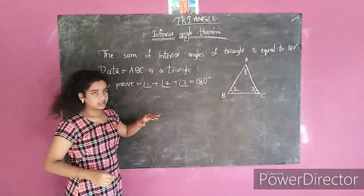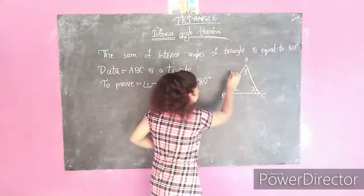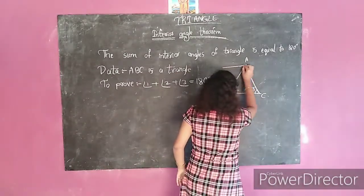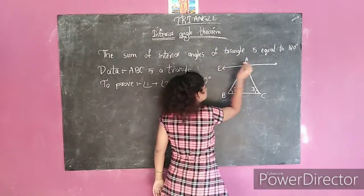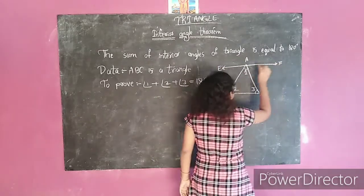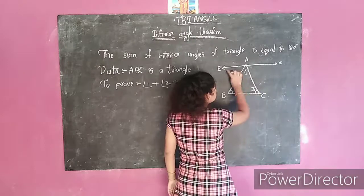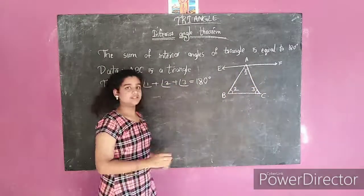Now we should draw EF. It is a line EF which is parallel to BC through point A. This is our construction.